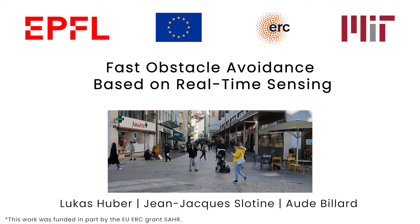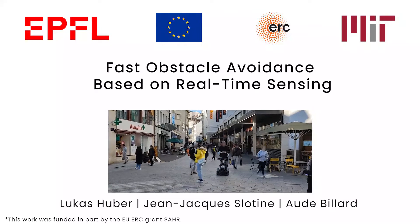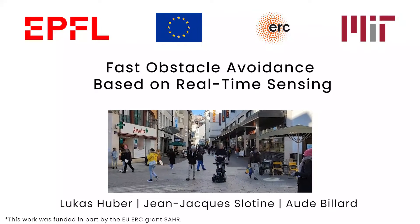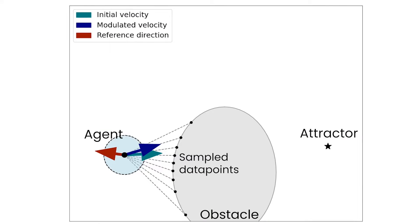Fast obstacle avoidance based on real-time sensing. We propose a closed form obstacle avoidance based on sample data. For this, we consider the blue circular agent which needs to avoid the grey obstacle to reach the attractor. The method gets as input the sample data points on the surface of the obstacles.